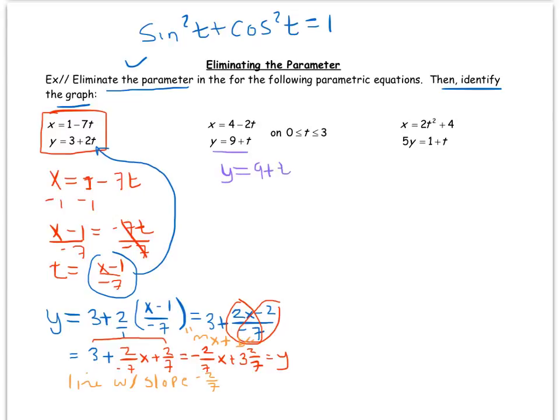If I just minus 9, I get y minus 9 equals t, and now I can take this and put it right in for t in the other equation.